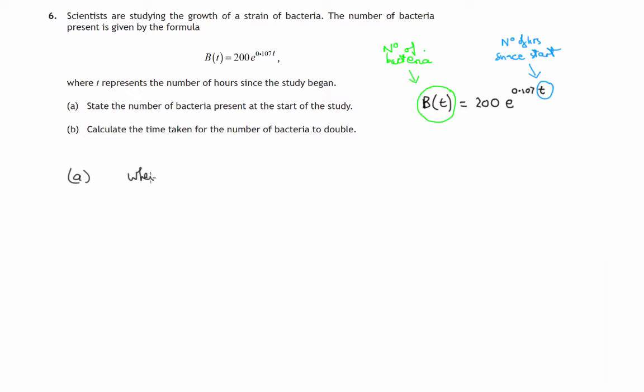When t equals 0, this part is 0. So B(0), the number of bacteria present at the very beginning of the study, is 200 times e to the power 0.107 times 0. That's 200 times e to the power 0, which is just 0, and your laws of indices tell you that any number to the power 0 gives you 1, unless the number's 0 to the power 0. That's a different story. So there's 200 bacteria present at the start.